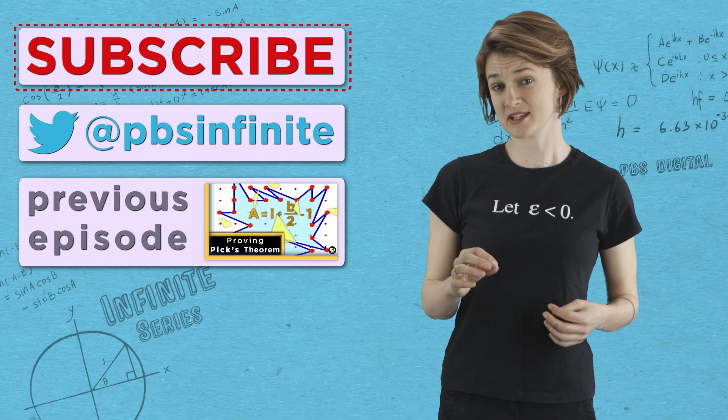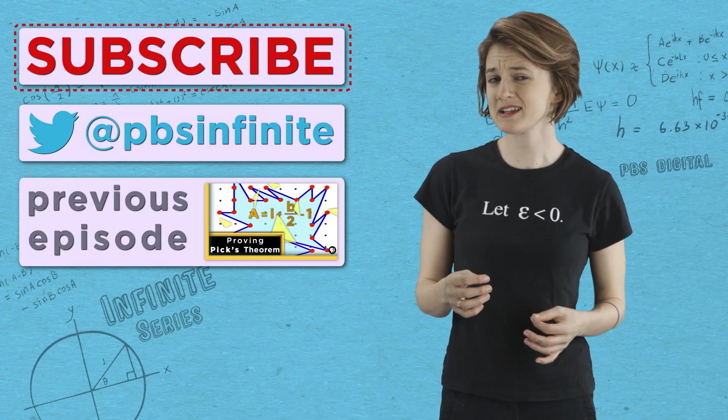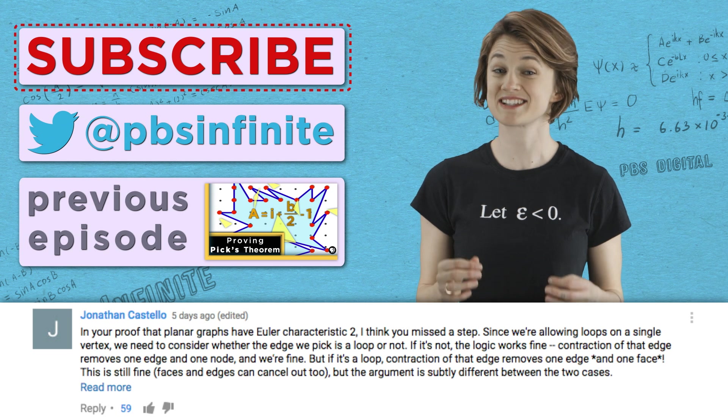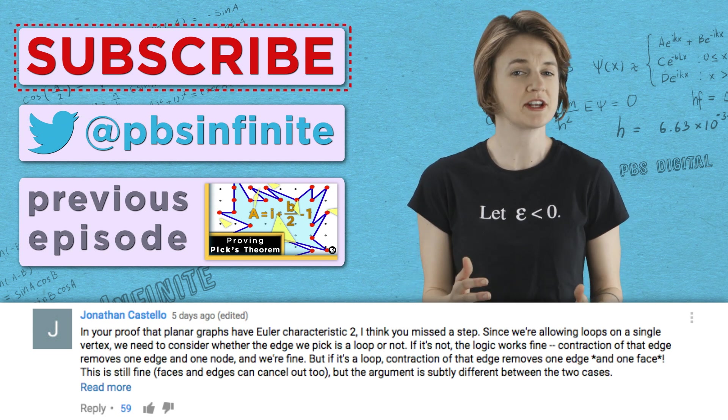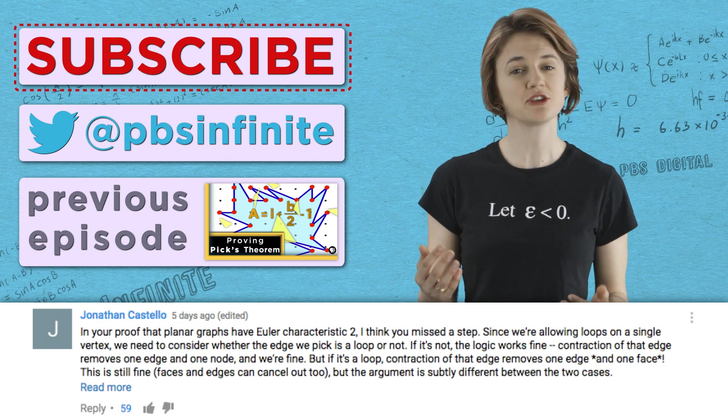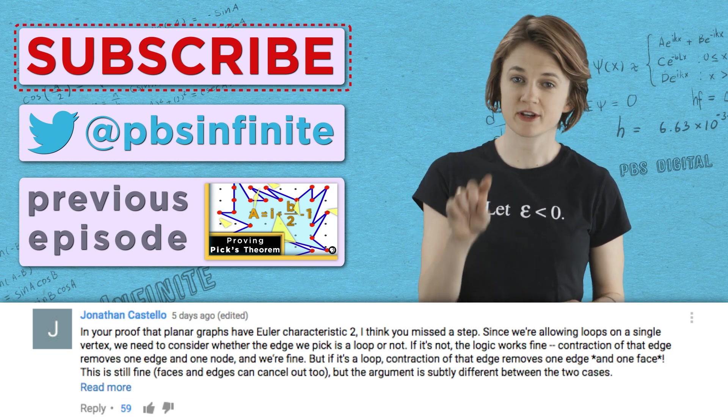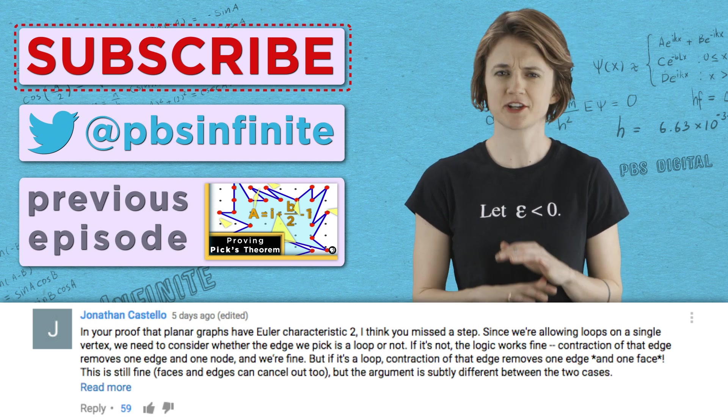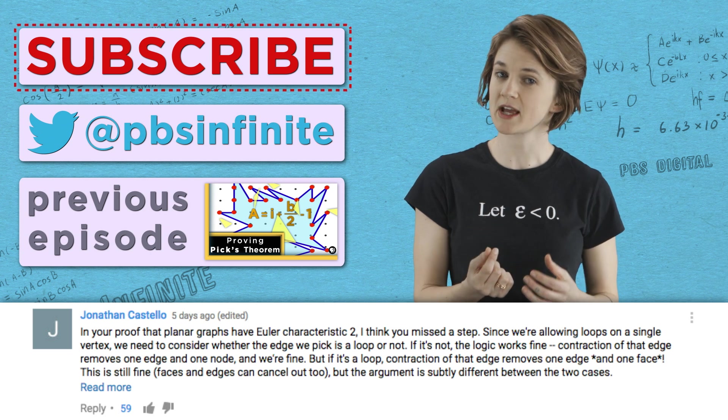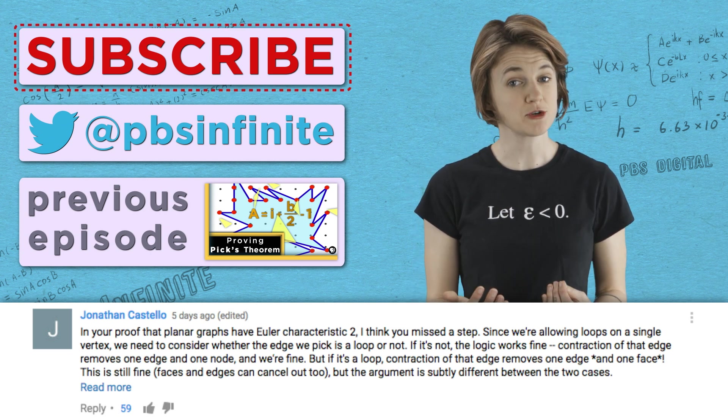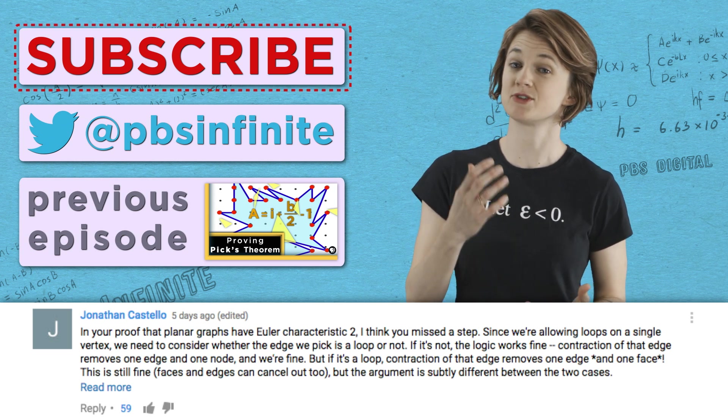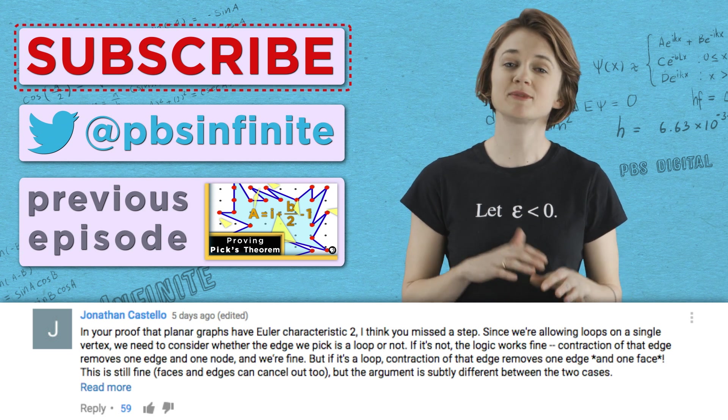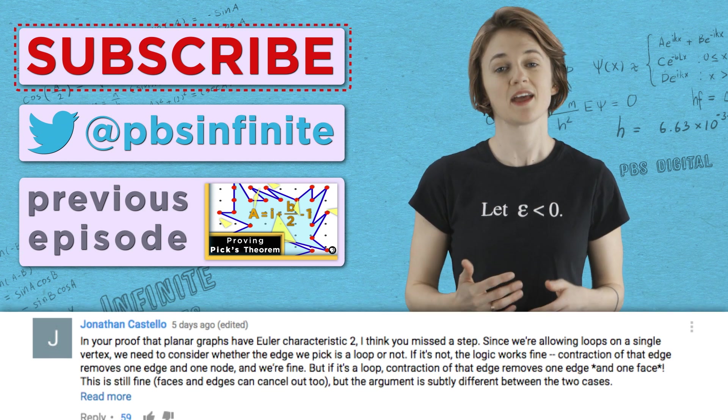Let's talk about your responses to Pick's theorem, the formula for finding the area of polygons with vertices on the integer lattice. First, Jonathan Castello has an excellent correction. He says, 'In your proof that planar graphs have Euler characteristic 2, I think you missed a step. Since we're allowing loops on a single vertex, we need to consider whether the edge we pick is a loop or not. If it's not, the logic works fine—contraction of that edge removes one edge and one node. But if it's a loop, contraction of that edge removes one edge and one face. This is still fine. Faces and edges can cancel out too. But the argument is subtly different between the two cases.' Thanks for pointing that out, Jonathan.